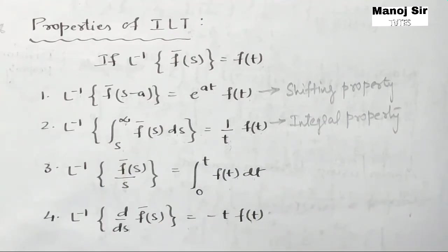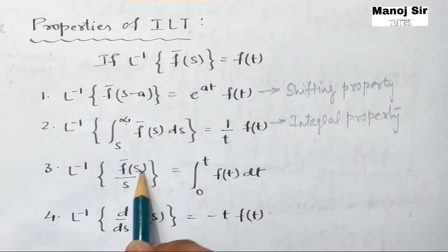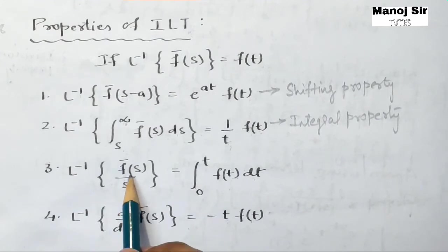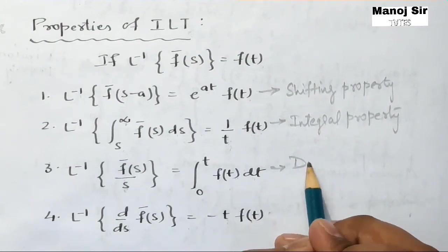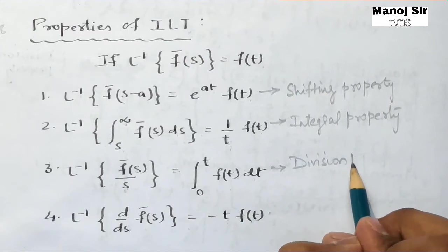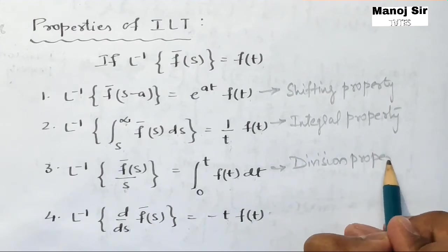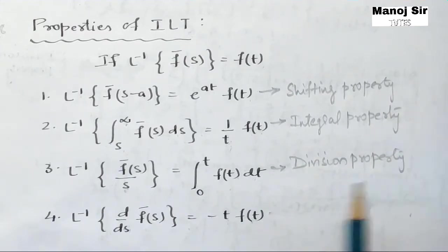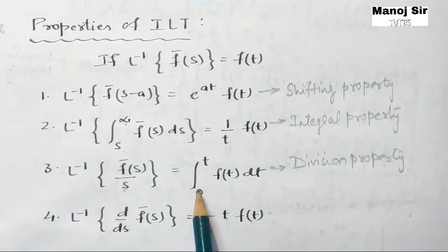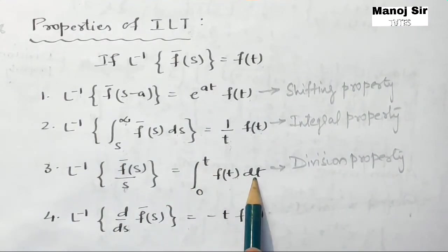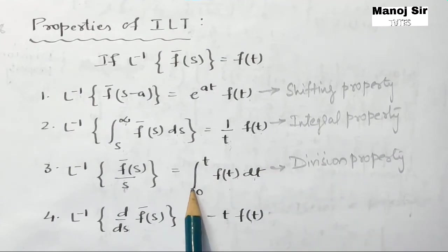Now coming to the third part — inverse Laplace transform of f-bar of s upon s. Here we are going to use the division property. Inverse Laplace transform of f-bar of s upon s equals integration from 0 to t of f(t) dt. Integral property in the case of Laplace transform becomes division property in the case of inverse Laplace transform.